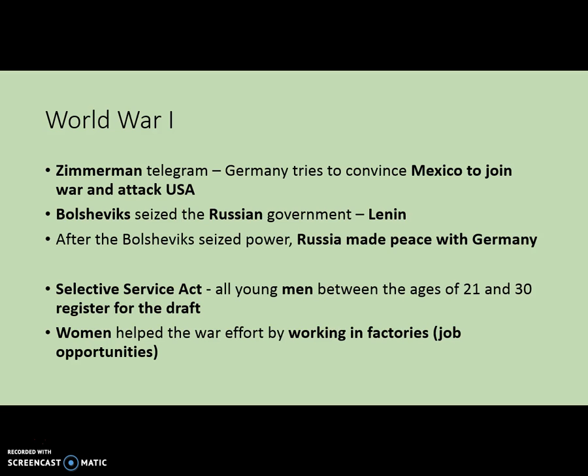The Zimmermann telegram: Germany tries to convince Mexico to join the war and to attack the United States. Over in Russia, the Bolsheviks seize power in the government, led by Vladimir Lenin. After the Bolsheviks seize power, Russia makes peace with Germany — that eliminates the Eastern Front and Germany is now able to focus all of their troops on the Western Front. But at the same time, the United States joins the war and provides the over-the-top help that the Allies need in order to defeat Germany.